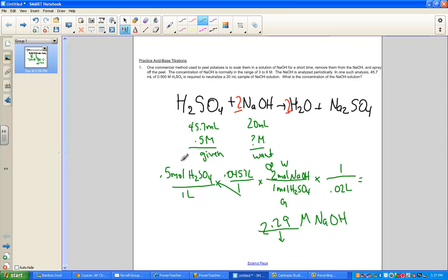0.5 molar of the acid times the volume, 0.0457. The ratio of want over given divided by the volume in step 3, 0.02 liters, the 20 mils we measured out, and the base concentration ended up to be too low for the acceptable range of 3 to 6 molar units.